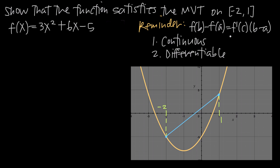The way we find point c — the point of tangency where the tangent line is parallel to the secant — is using the formula: f(b) - f(a) = f'(c) · (b - a). We'll use that formula and when we simplify, we'll get a value for x. That x value will be the x-coordinate of the point of tangency.